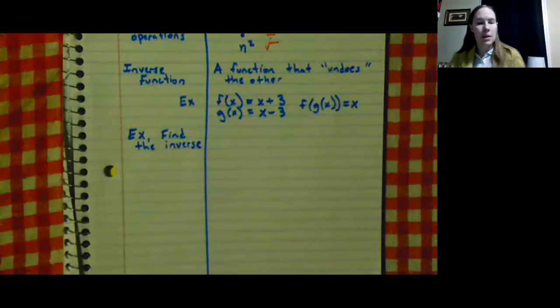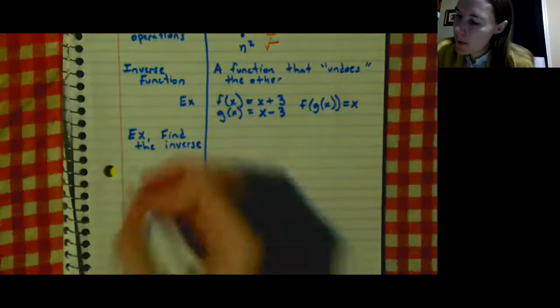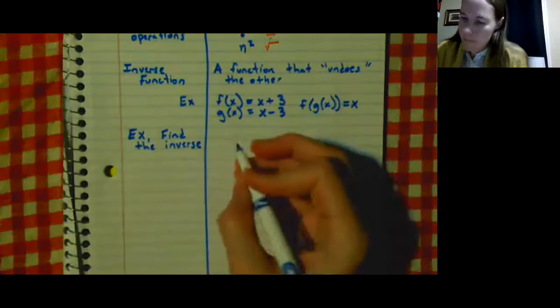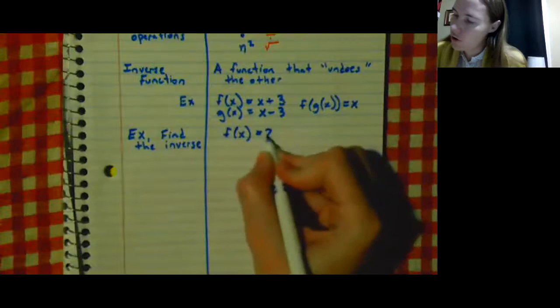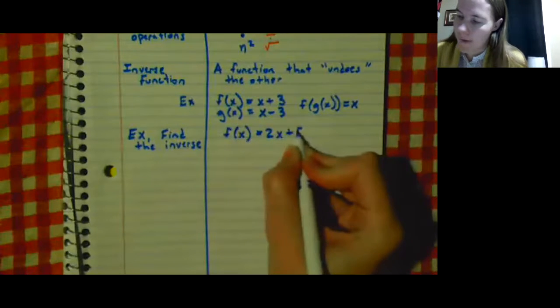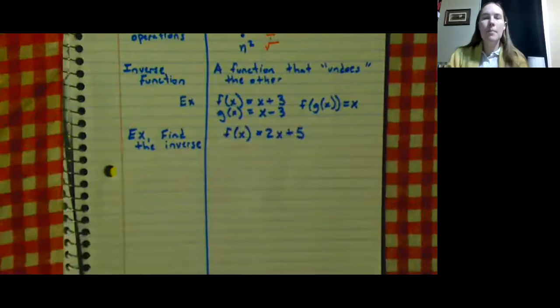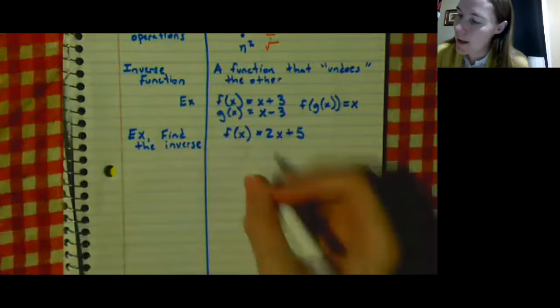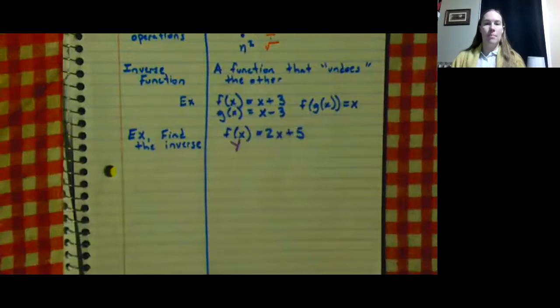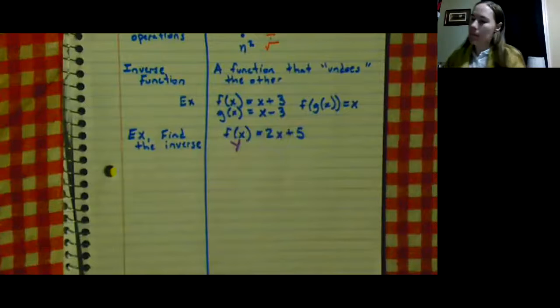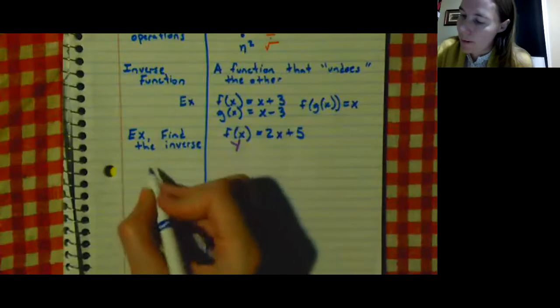So say we have f(x) = 2x + 5. Remember, f(x) is the same thing as saying y, so these two things are the same thing. And this is important to remember because of step one.